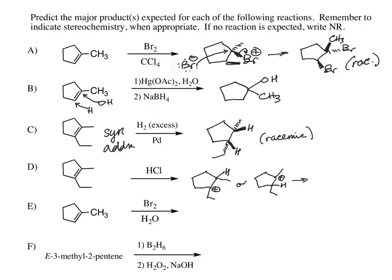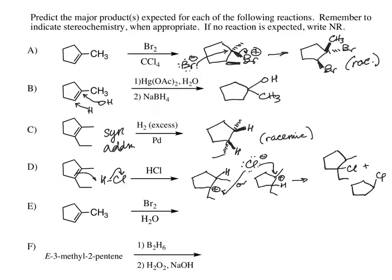Both carbocations are going to lead to major products. Protonation of the pi bond happens with either regiochemistry using two arrows for proton transfer. When the chloride formed in our first step comes back as a nucleophile, it can add to either of these carbocations, giving a mixture of regiochemistries. This is not a stereospecific reaction because the hydrogen is added in one step and the chloride is added in the second step — it doesn't happen with only syn or only anti-addition. We get a total mixture of stereochemistry, so we draw them as flat lines.